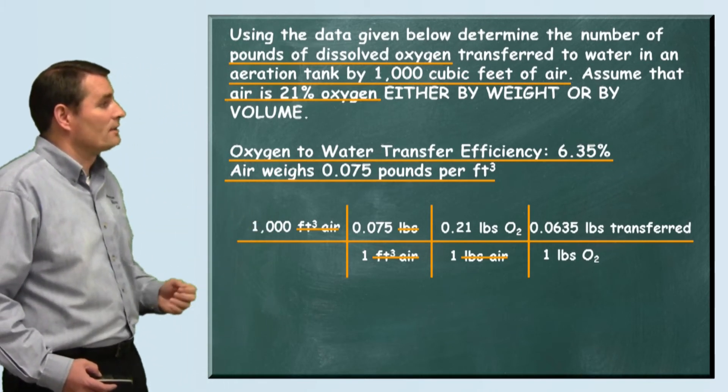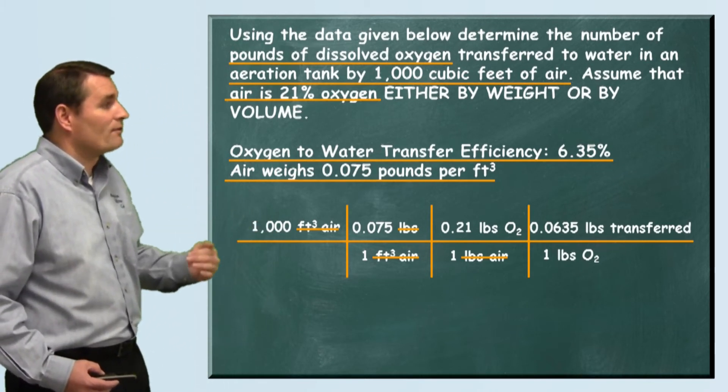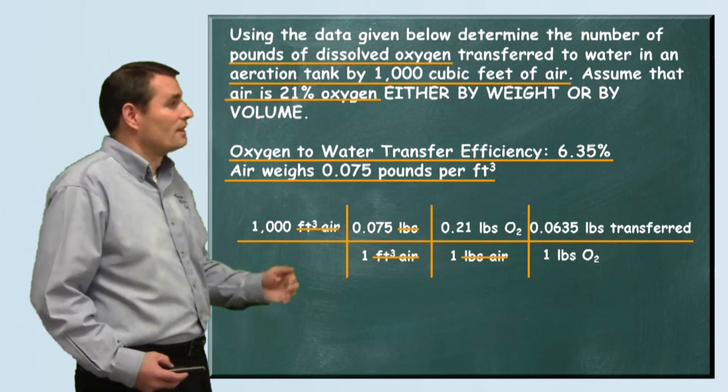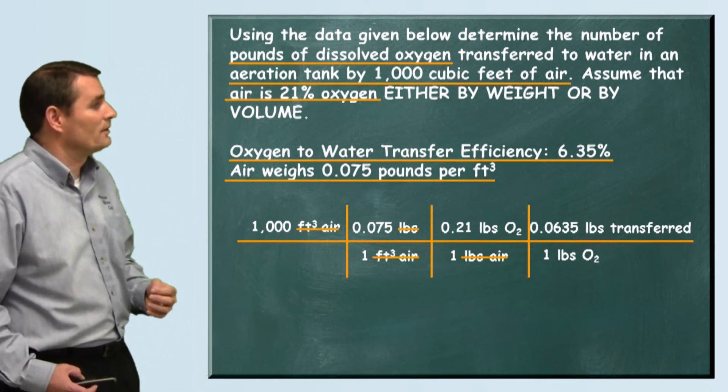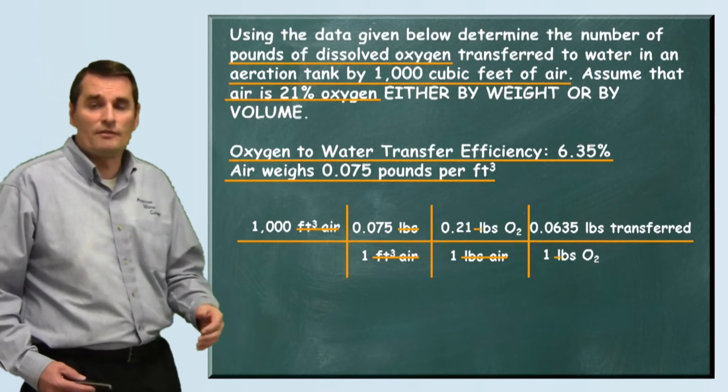We're going to say that one pound of oxygen, for every pound of oxygen delivered, we're transferring 0.0635 pounds of oxygen.